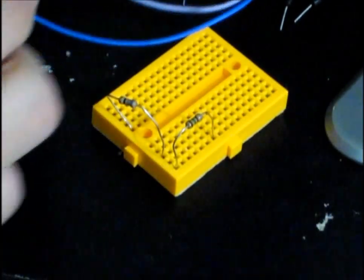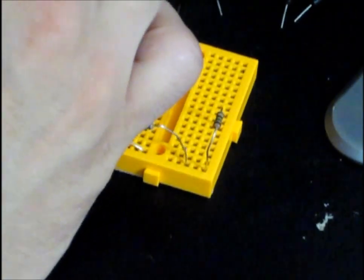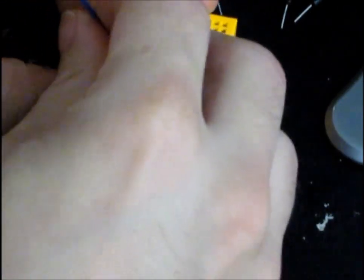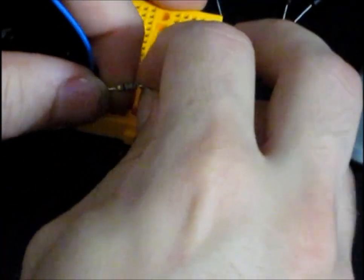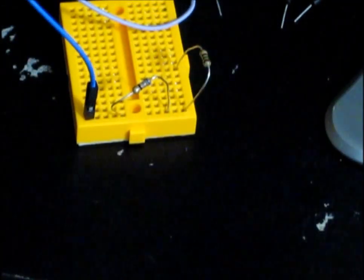Now we'll take our 3.3 volt line out of the Raspberry Pi and put the 3.3 volts, connect it to R1 right there. And that would be the VIN.